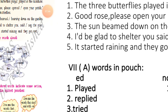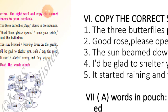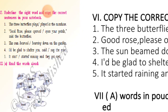Page number six, Roman numeral six: underline the right word and copy the correct sentence in your notebook. The three butterflies 'played' in the sunshine — 'played' is correct. Rose 'open' your petals — 'open' is correct. The sun 'beamed' down on the garden — 'beamed' is correct. 'Said' the rose — 'said' is correct. It 'started' raining and they got wet — 'started' is correct.